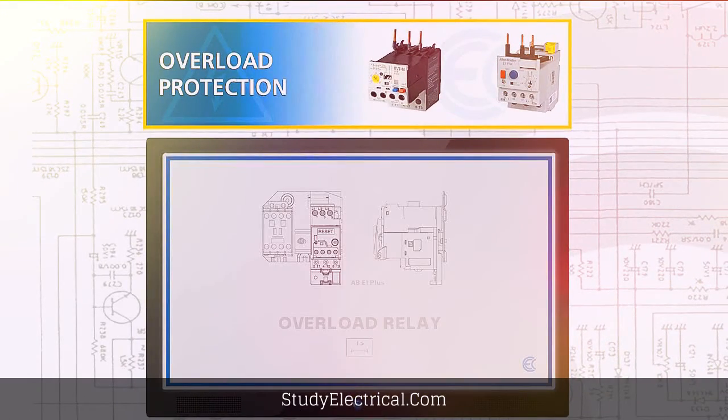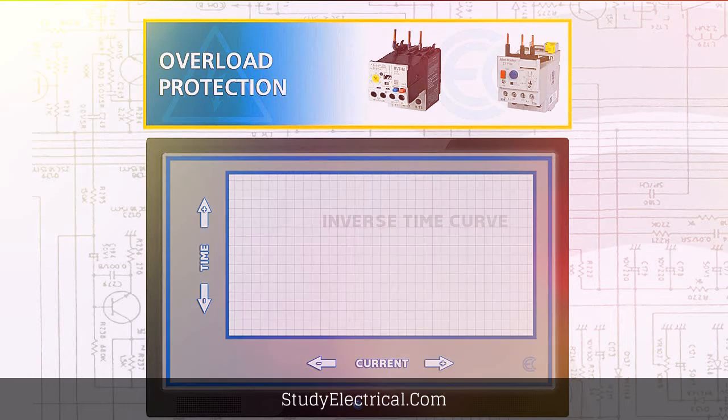Overload protection is protection against a running overcurrent that would cause overheating. Overload protection typically operates on an inverse time curve where the tripping time becomes less as the current increases. This means an overload relay isn't going to trip on momentary or short-term overcurrent events that are normal for the piece of equipment it's protecting.